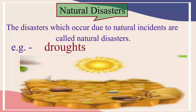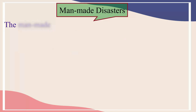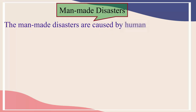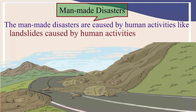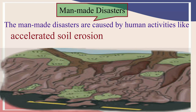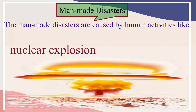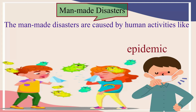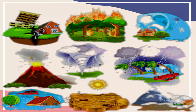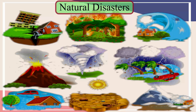The man-made disasters are caused by human activities like landslides caused by human activities, accelerated soil erosion, leakage of poisonous gases, nuclear explosion, epidemic, etc. In the next module, we shall know about different kinds of natural disasters.